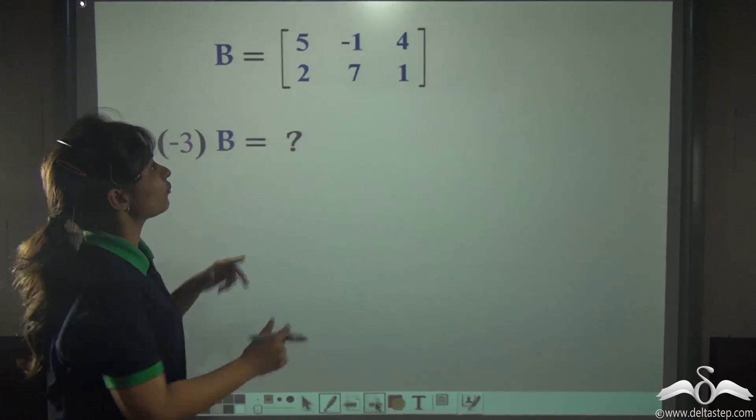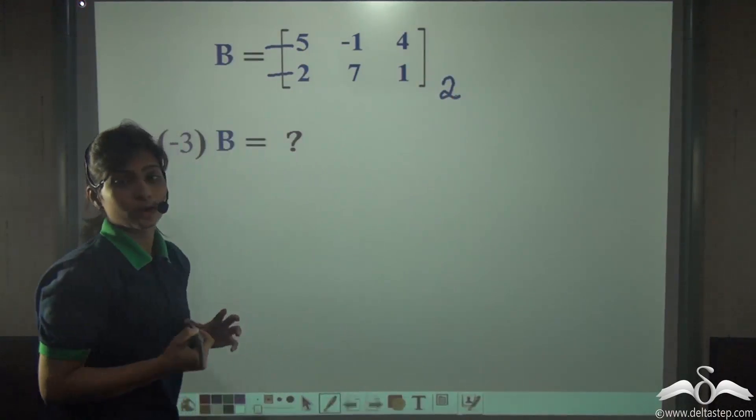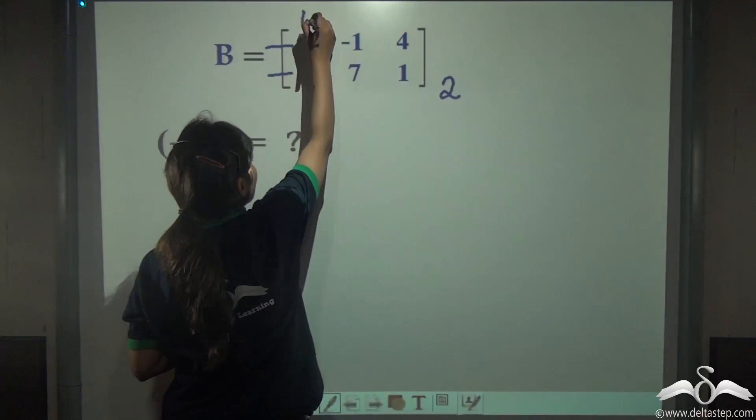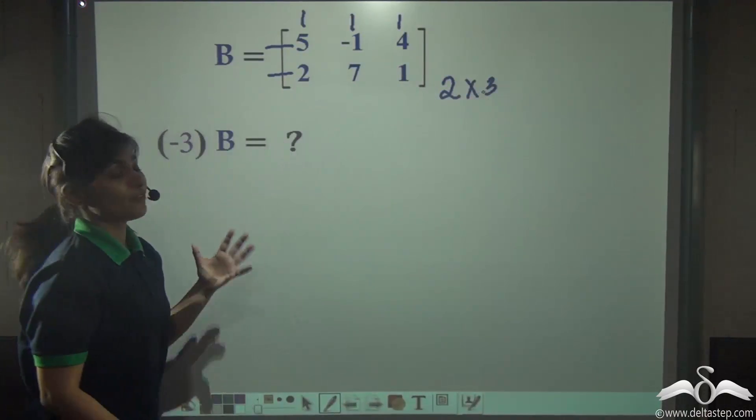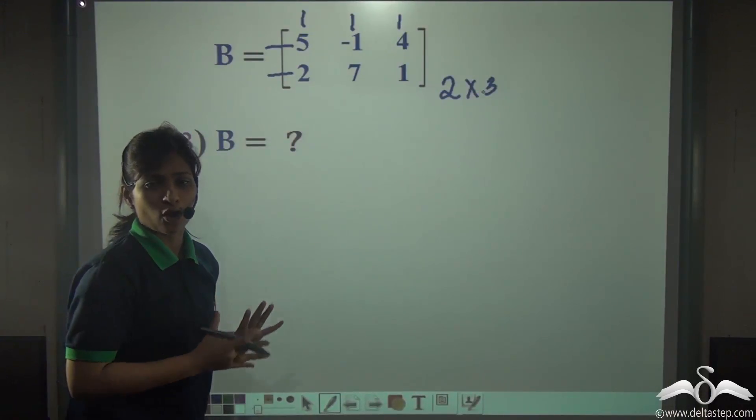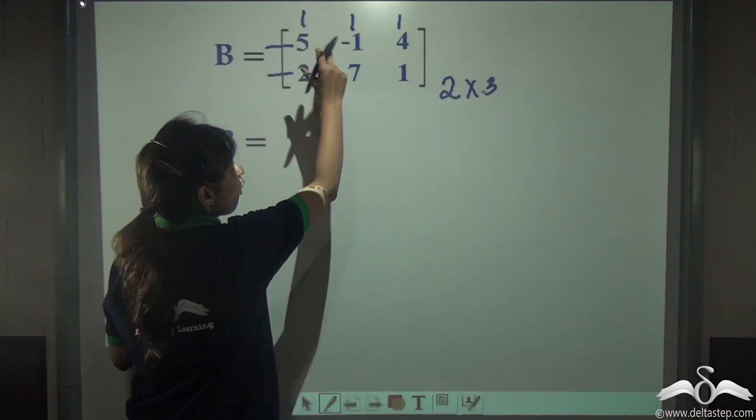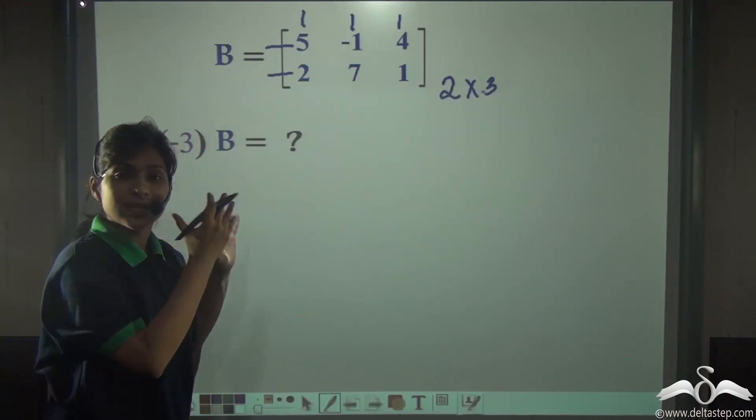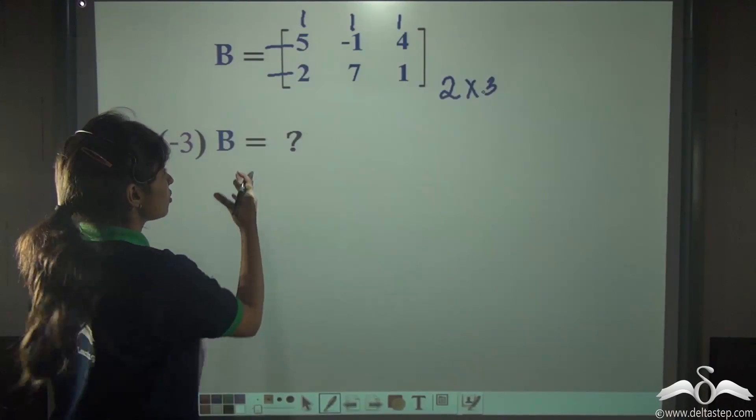What you can see is the number of rows is 2 and the number of columns is 3, so 2 by 3. But whenever we have to multiply a number with a given matrix, we do not have to look at the order of the matrix because the number needs to be multiplied to all the elements or all the entries inside the matrix.